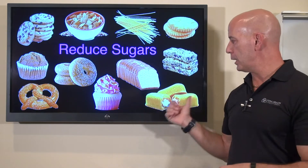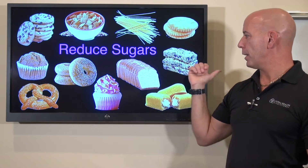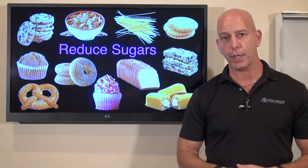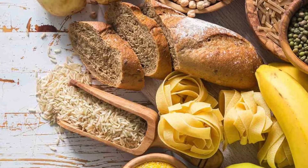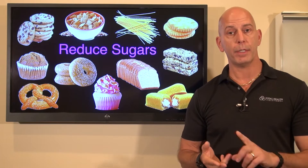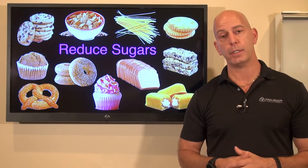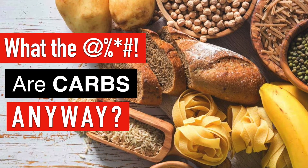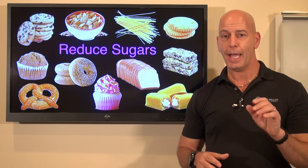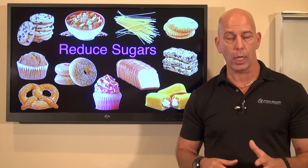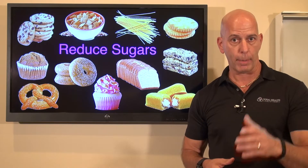A lot of times patients will say, 'Dr. Nick, I don't eat Twinkies and cupcakes. I'm not a sugar fiend — no cookies, bars, or muffins.' Well guys, sugar comes from a lot of other things too, like your grains. Whenever you have pasta, cereal, rice, tapioca, or potato, those are sugars too — they just become bigger sugar molecules. I did a video called 'What the Bleep Are Carbs Anyway' where I really get into what carbohydrates are and whether there are essential carbohydrates, like there are essential fats and essential amino acids. Watch that video.